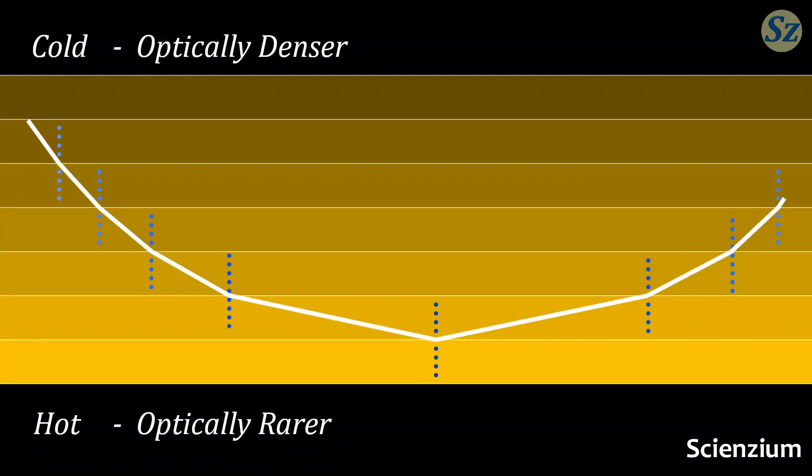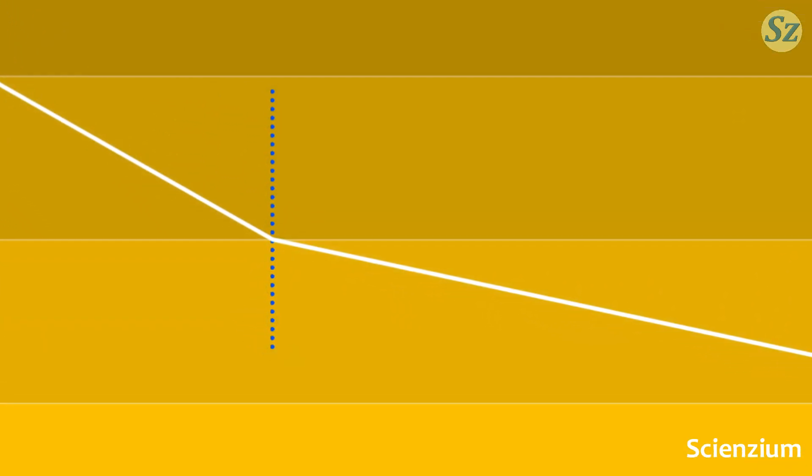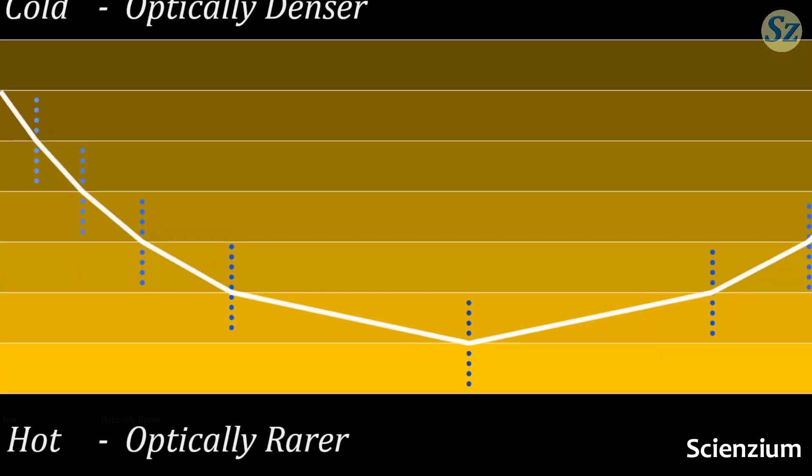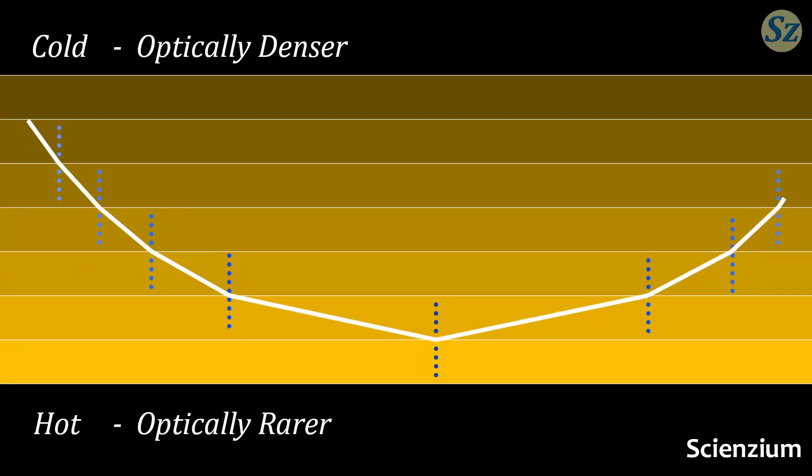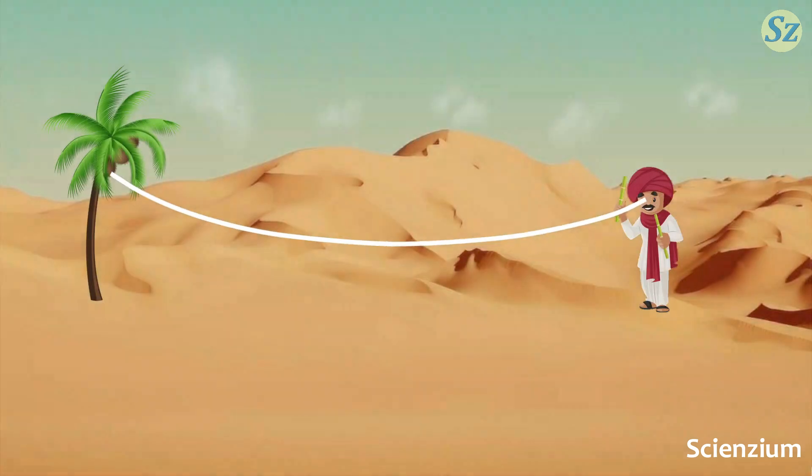As light moves from the denser to the rarer medium, it bends away from the normal. This continues until, at some point, the angle becomes so extreme that total internal reflection occurs. The reflected light then reaches our eyes.